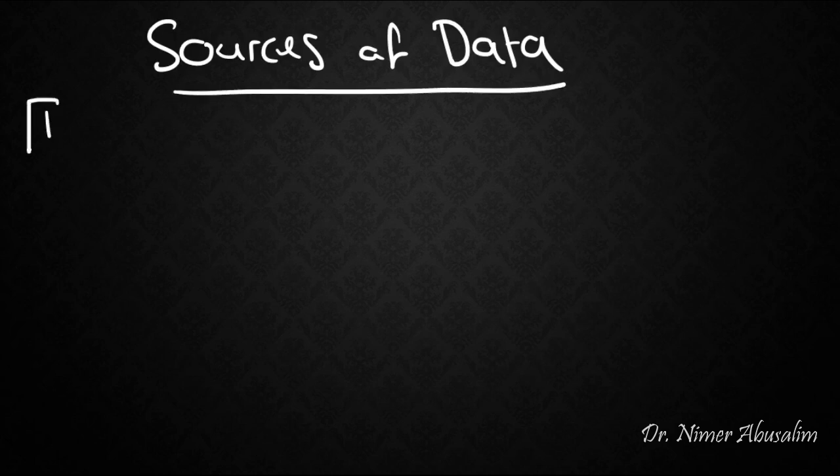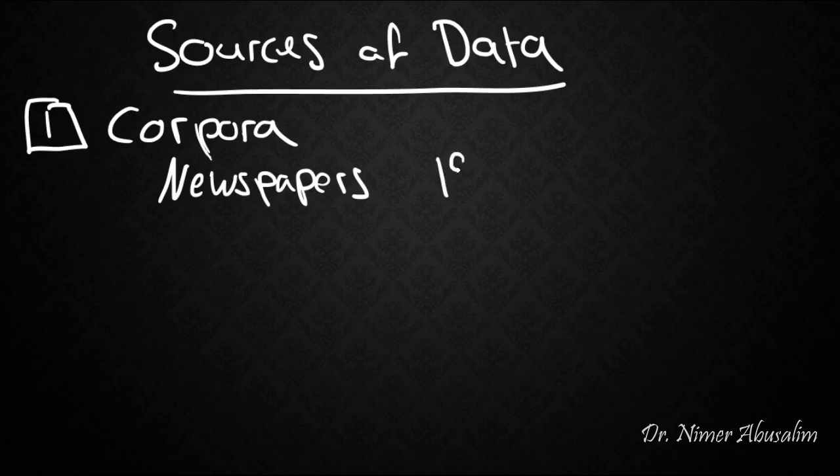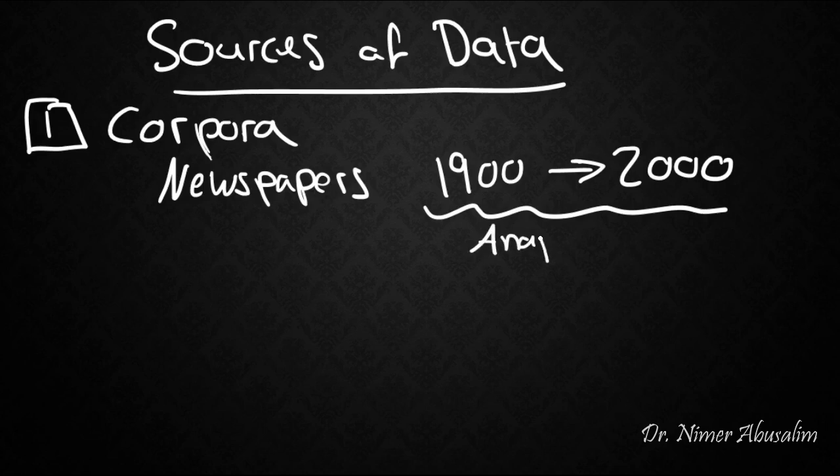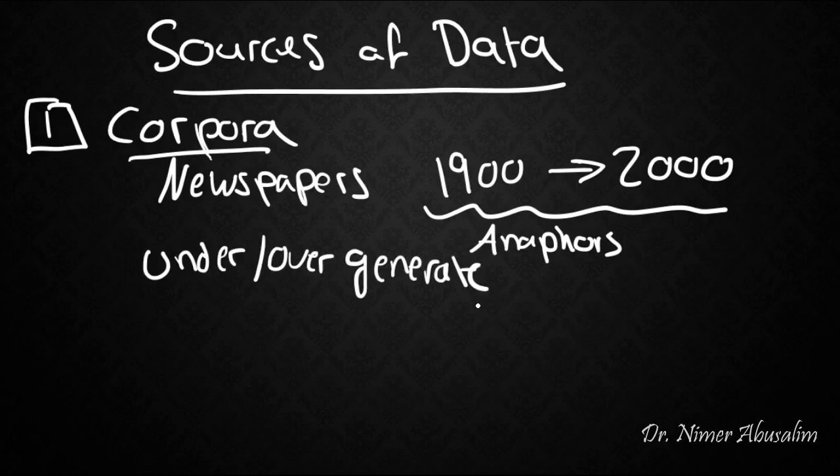Well, there are two main sources. First, we can look at corpora. Now corpora is like a collection of things that contain natural language or language used by humans. So for example, you could look at a collection of newspapers, say from 1900 to 2000, a span of 100 years and use the information here to find out about the rules that govern anaphors. But there's a problem with only relying on corpora. The problem is that sometimes they under or over generates.